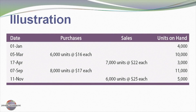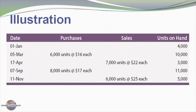Let's look at our schedule of purchases. On January 1, we started with the 4,000 units and bought 6,000 units at $16 each. On March 5, we sold 7,000 units at a selling price of $22 per unit. September 7, we bought 8,000 units at $17. On November 11, we sold 6,000 units at a selling price of $25 each. So we started with 4,000 units, increased to 10,000, dropped to 3,000, then had a purchase bringing us to 11,000 and a sale taking us down to 5,000.